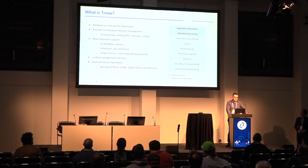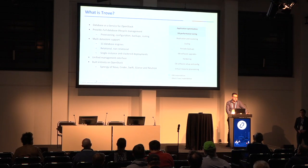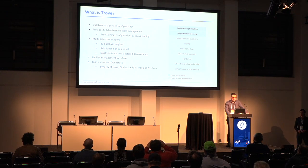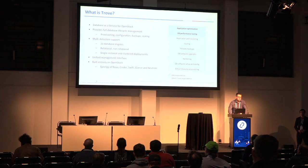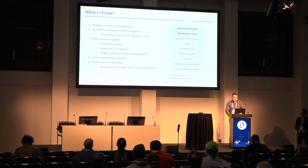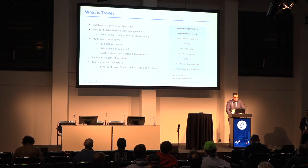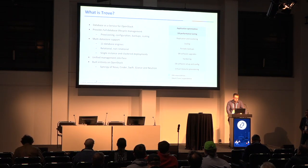Trove is a database as a service for OpenStack. It provides full lifecycle management for databases, currently supports 11 database engines, both relational and non-relational, for single instances as well as clusters. It provides a datastore-agnostic API for managing databases, and it's built entirely on OpenStack components with close synergy with Nova, Cinder, Swift, Glance, and Neutron.